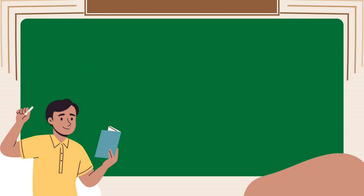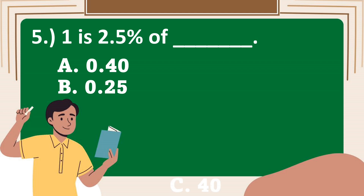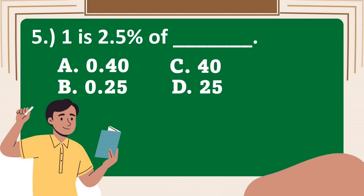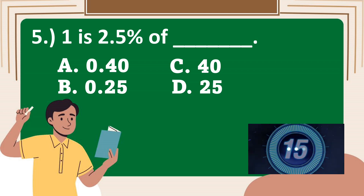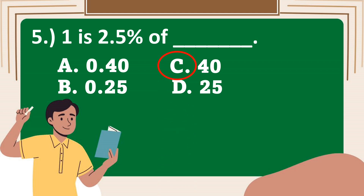Number 5. 1 is 2.5% of blank. A. 10, B. 12, C. 40, D. 20. The correct answer is C. 40.